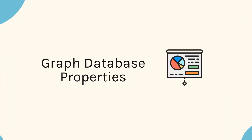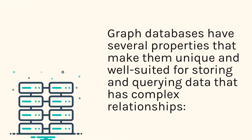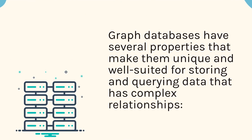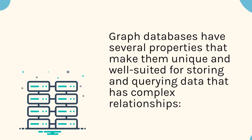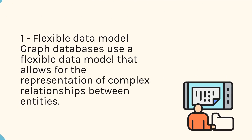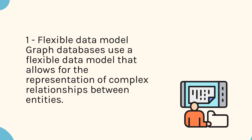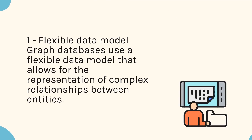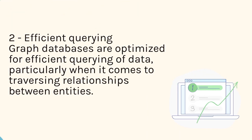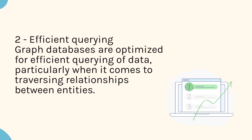Graph database properties. Graph databases have several properties that make them unique and well-suited for storing and querying data that has complex relationships. 1. Flexible data model — graph databases use a flexible data model that allows for the representation of complex relationships between entities. 2. Efficient querying — graph databases are optimized for efficient querying of data, particularly when it comes to traversing relationships between entities.